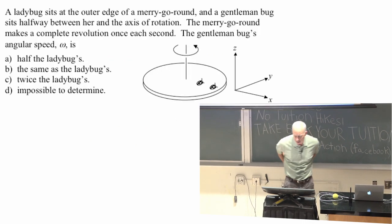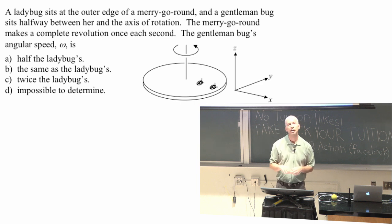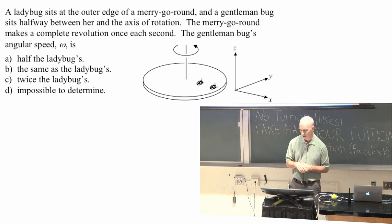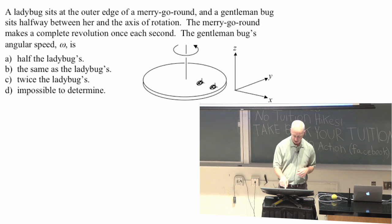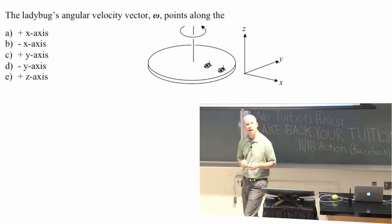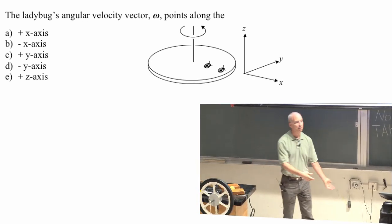I asked this one last time, so I'm not going to ask it again. Two objects going around one time, so two pi radians every second, have the same magnitude angular velocity, and in fact, the same direction. So this was the gentleman bug had the angular speed same as the ladybugs. Angular speed, by the way, is the magnitude of the angular velocity, just like speed is the magnitude of the velocity vector.